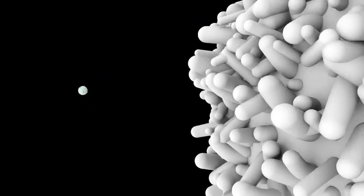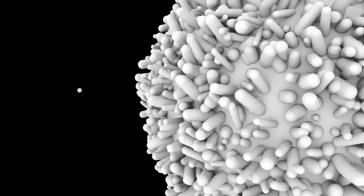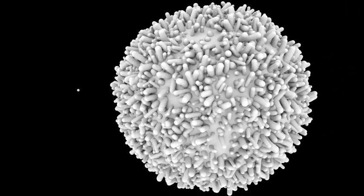At about 100 nanometers in diameter, HIV is about 100 times smaller than its target cell, the T cell, shown here to scale.